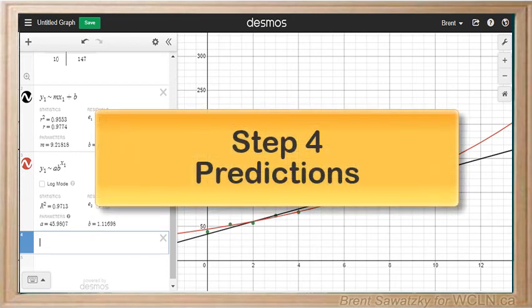Step four: predictions. At this point, you've plotted the data, recognized the shapes in the data, and zeroed in on a best fit line or curve.